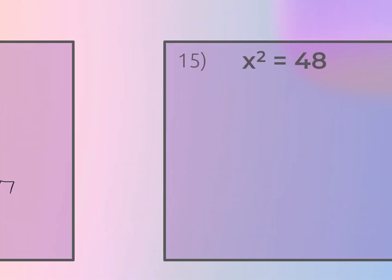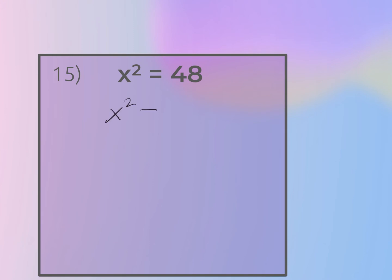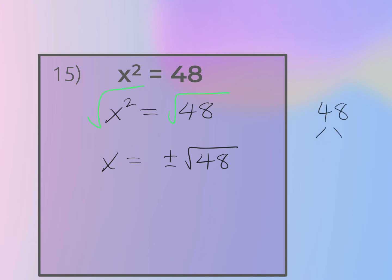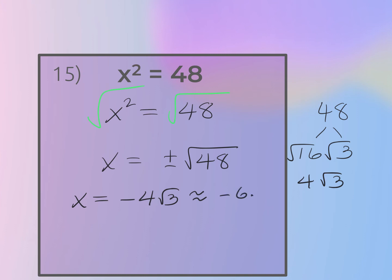For number fifteen, x² = 48 is already isolated. Square root both sides: x = ±√48. On the quiz, leave it in simplest radical form. Break down √48 using the largest perfect square: 16 × 3, giving 4√3. So the answers are x = −4√3 ≈ −6.93 and x = +4√3 ≈ +6.93.